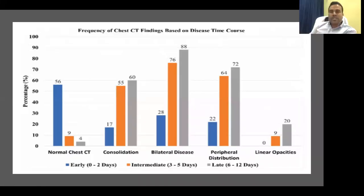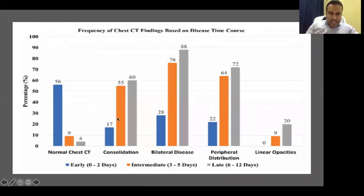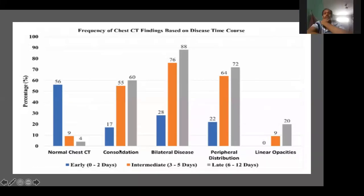A study based on 121 X-ray patients with COVID-19 clearly shows the progression. An early X-ray around day two will appear mostly normal — 56% will be normal on day two. The intermediate X-ray at three to five days and the late X-ray at six to twelve days show increasing findings. The most important findings in intermediate to late days include consolidation, bilateral disease, and peripheral distribution — peripheral bilateral consolidation or GGO.